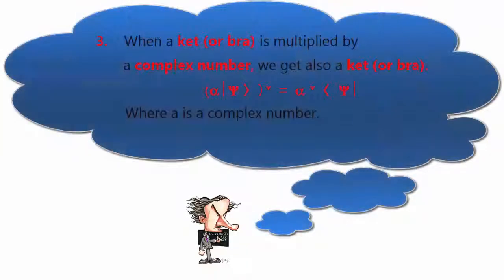3. When a ket, or bra, is multiplied by a complex number, we get also a ket, or bra, where A and ψ is a complex number.